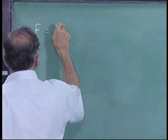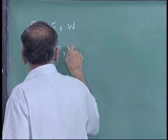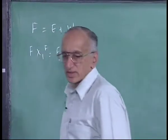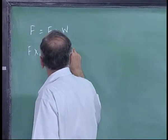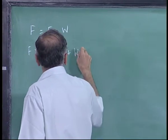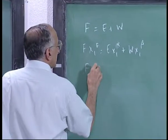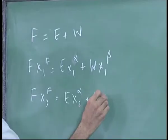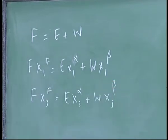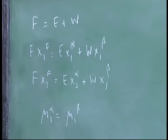So you will get f is equal to E plus w, then f x1 f, actually the layers are alpha, okay it does not matter. E is I have marked as x1 alpha plus w x1 beta and then I have a balance on azadirachtin, f x3 f equals E x3 alpha plus w x3 beta and then I have chemical potential of 1 in the alpha phase same as chemical potential of 2.